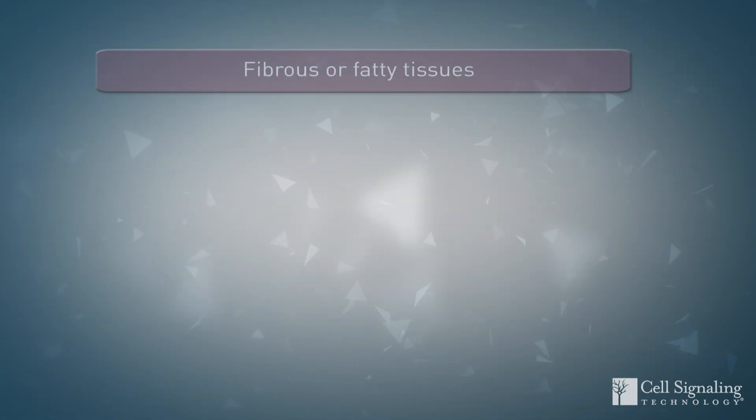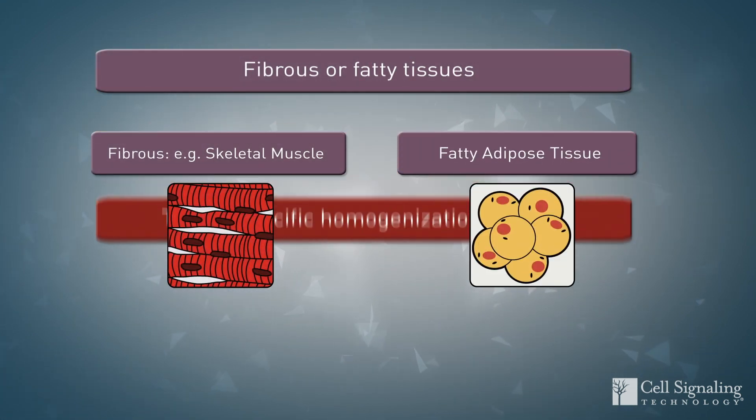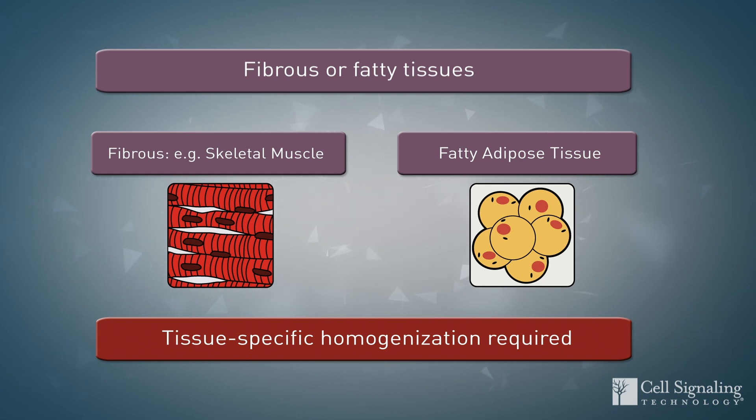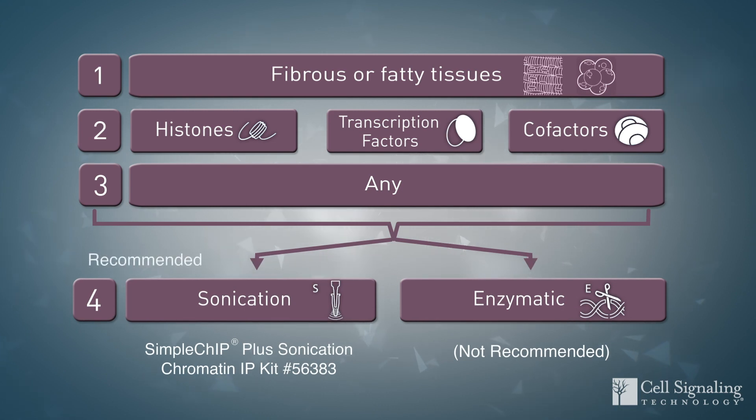Note that especially fibrous tissues like skeletal muscle and fatty adipose tissues are more difficult to homogenize. A tissue-specific protocol is required to homogenize these samples into single-cell suspensions prior to chromatin fragmentation.